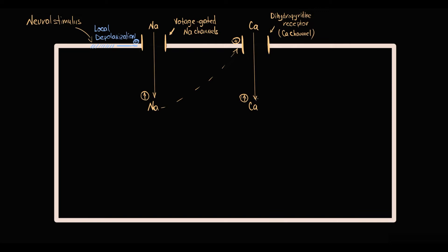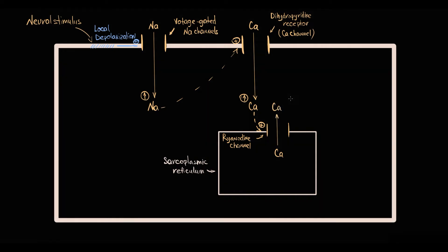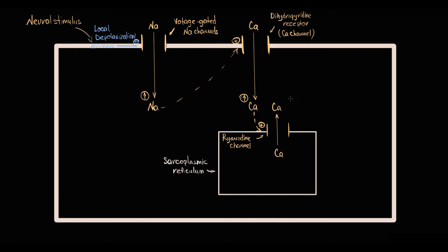Increasing intracellular calcium level induces activation of ryanodine channels located on the sarcoplasmic reticulum. With activation, ryanodine channels open, and calcium stored in the sarcoplasmic reticulum moves by concentration gradient into the cytosol. This causes a significant increase in intracellular calcium level, and calcium massively binds to troponin and induces contraction.